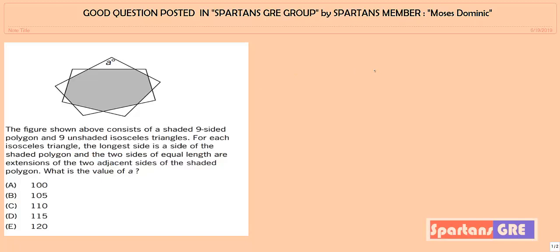This is one of the good questions — there is some concept involved. Before solving it, I will tell you the concept, then we will move on to the question. The question says: the figure shown above consists of a shaded nine-sided polygon and nine unshaded isosceles triangles. We need to find the angle A. No side values or any angles are given, so you have to find A directly.